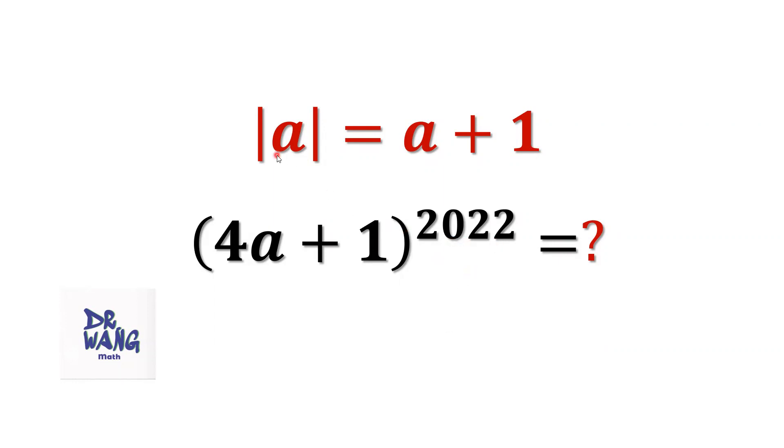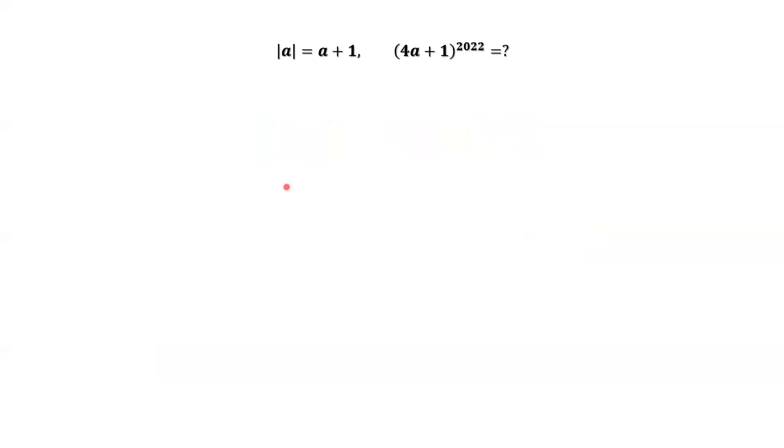How to solve an absolute value equation? For the absolute value sign, we have two possible results for absolute value of A, depending on the value of A.